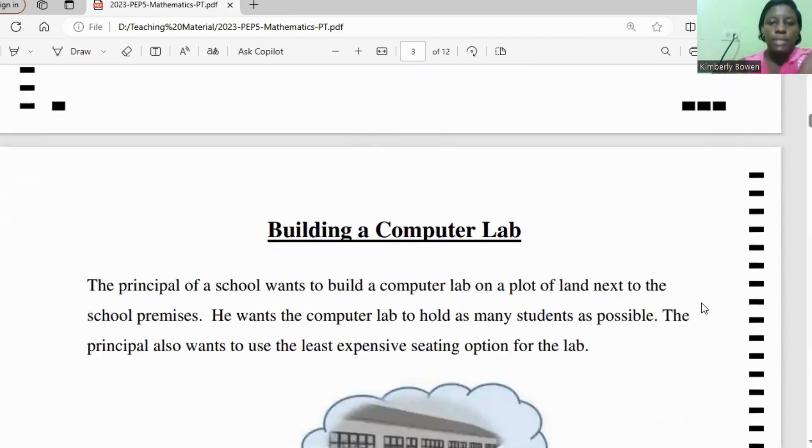So the title is Building a Computer Lab. It says the principal of a school wants to build a computer lab on a plot of land next to the school premises. He wants the computer lab to hold as many students as possible. The principal also wants to use the least expensive seating option for the lab.